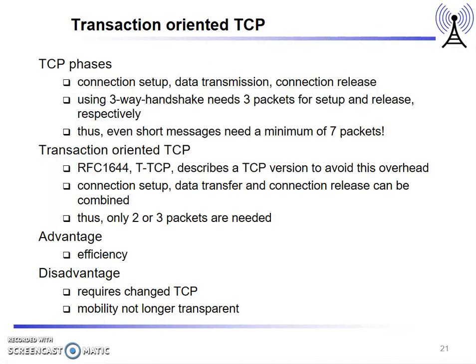The next optimized protocol is transaction-oriented TCP. In standard TCP there are three phases: connection setup, data transmission, and connection release, using a three-way handshake that takes three packets for setup and three for release. Because of this three-way handshake, even short messages need a minimum of seven packets.